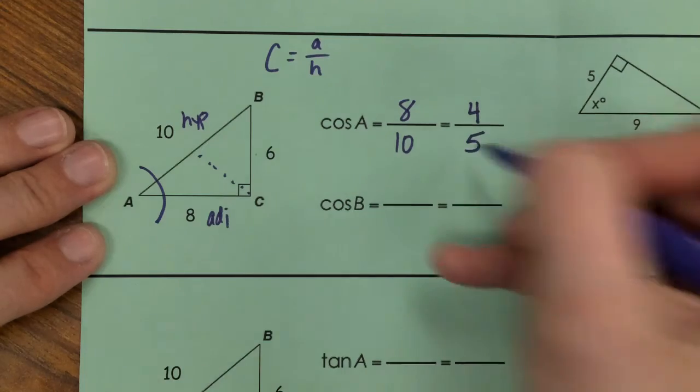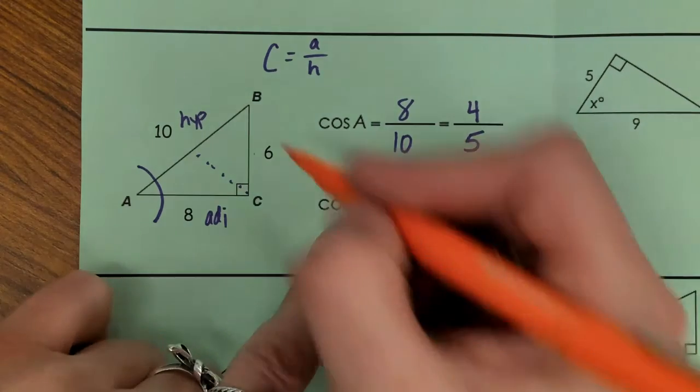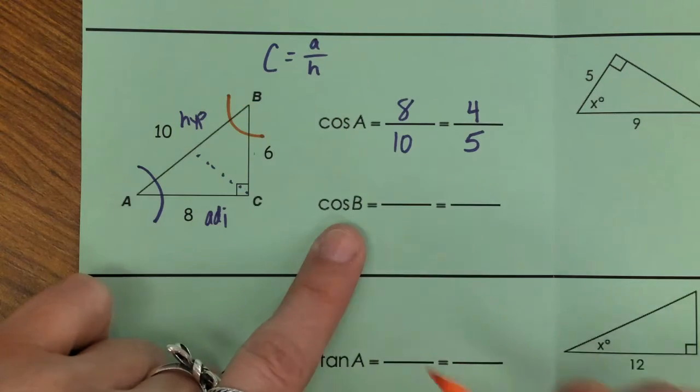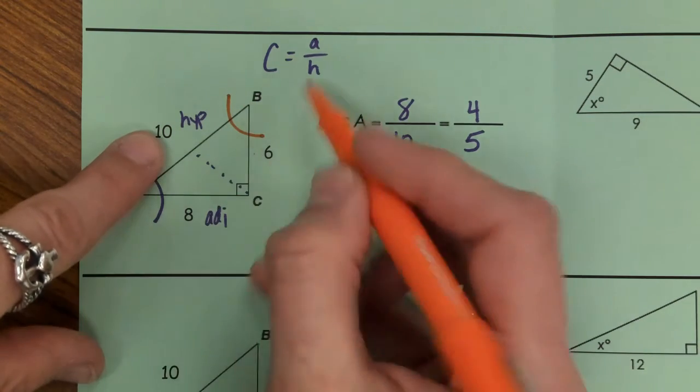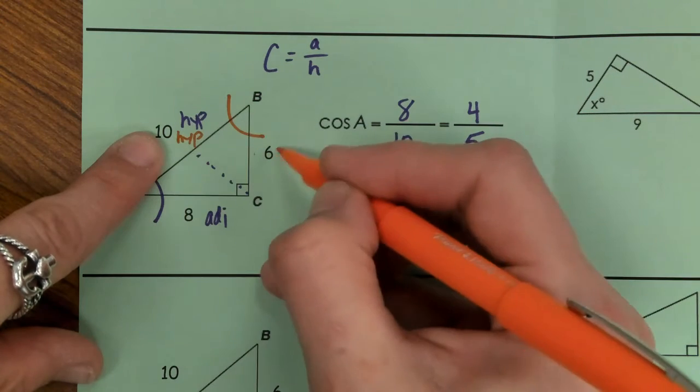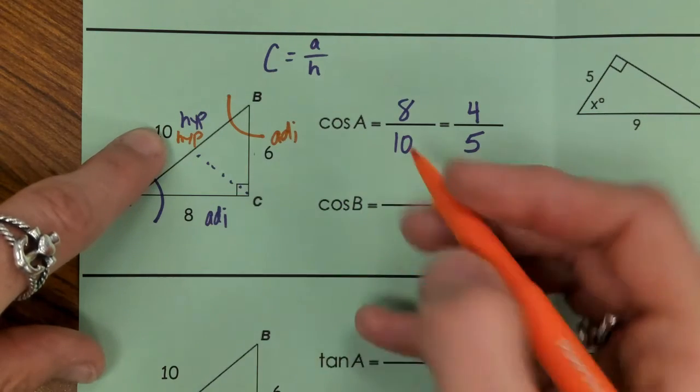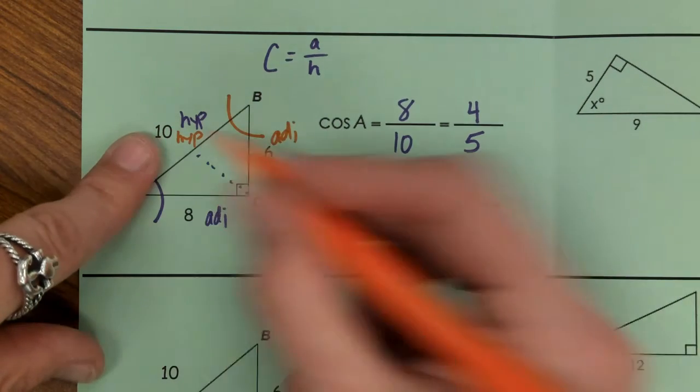Skipping over to reference angle B, we want to take a look again. We're looking at adjacent and hypotenuse—hypotenuse will not change. Our adjacent now becomes the side of 6, so we have adjacent 6 over our hypotenuse of 10, simplifies down to 3 over 5.